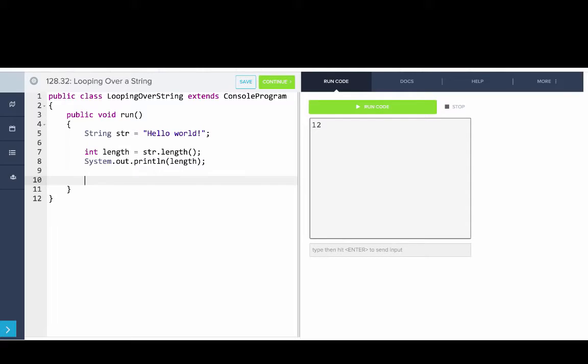So now let's use a for loop to print out all those characters. So we'll say for int i equals zero, i is less than str dot length, i plus plus. And now we'll get the current character at position i. So we'll say character cur equals str dot charAt i.